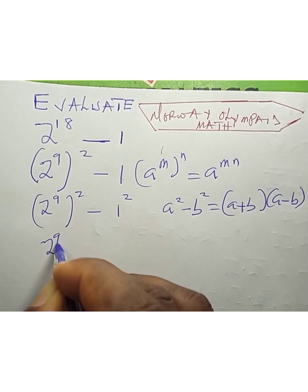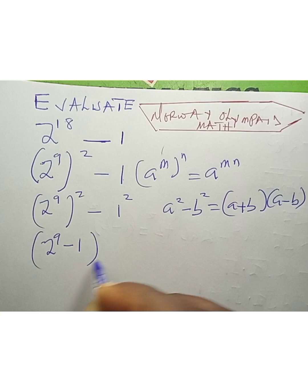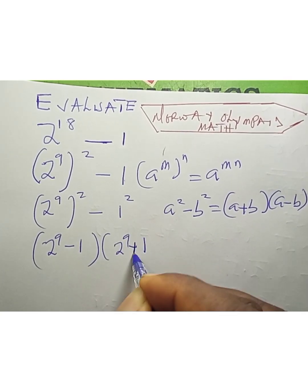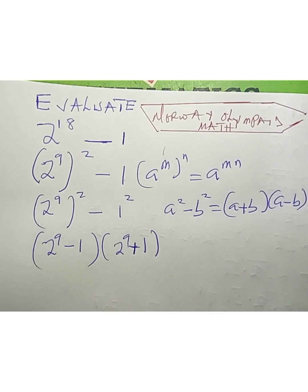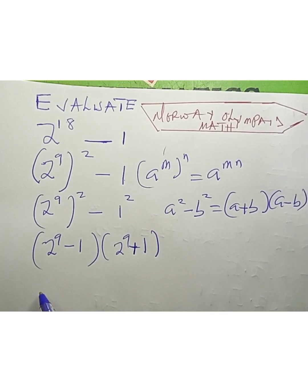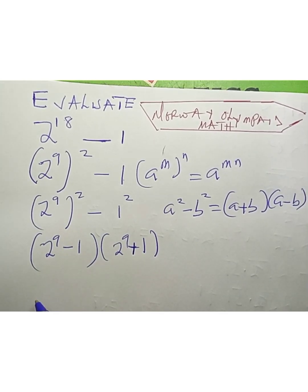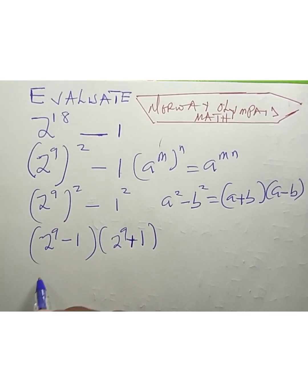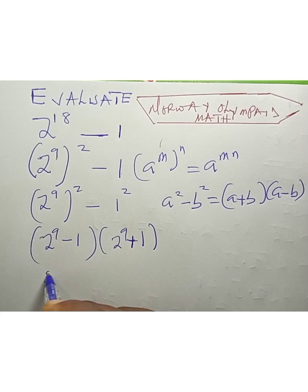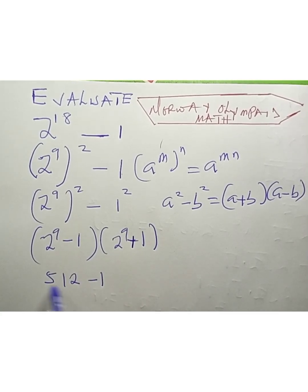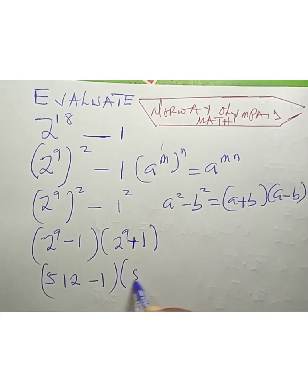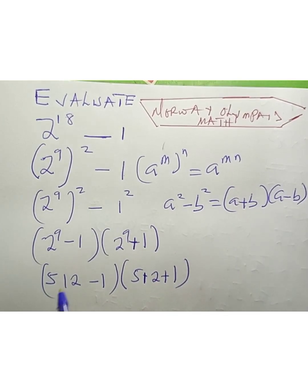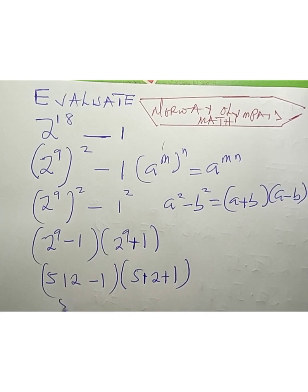So we can evaluate this as 2 raised to power 9 minus 1, times 2 raised to power 9 plus 1. Now, 2 raised to power 9 is 512, so the result becomes 512 minus 1 times 512 plus 1.